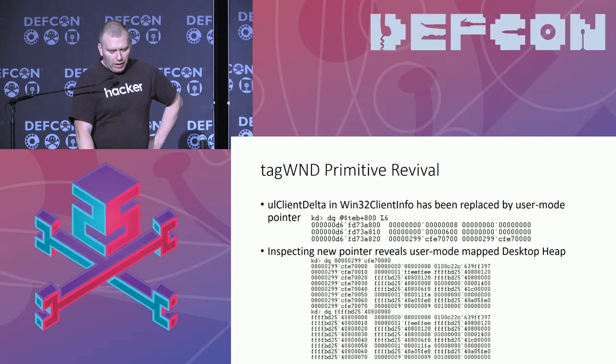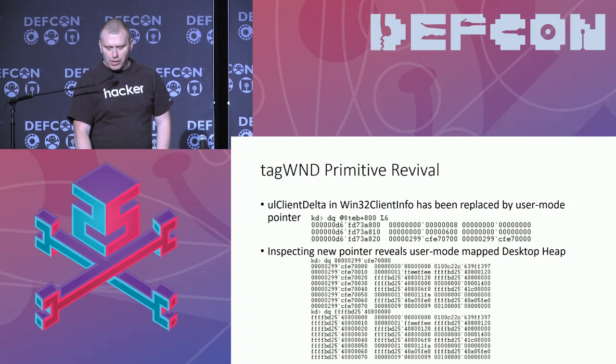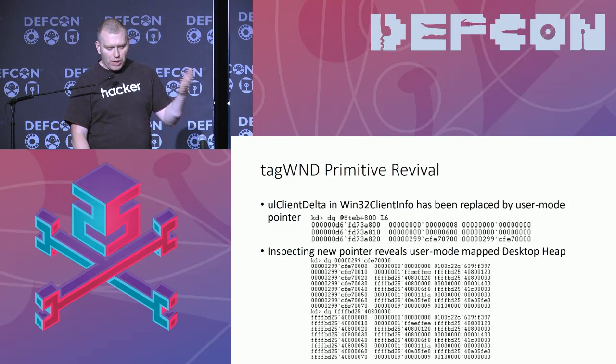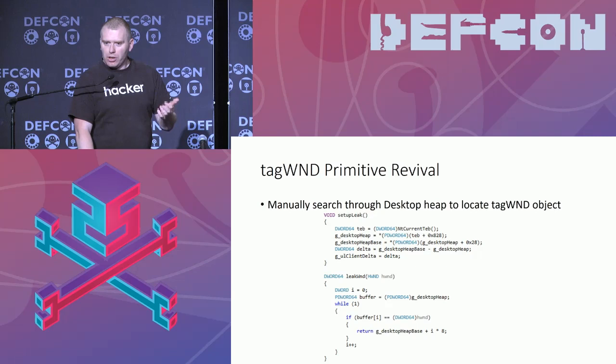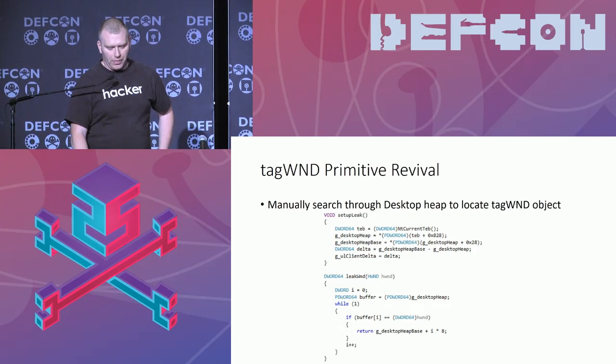As I said, the client delta is now gone, but if we inspect memory, we find it's been replaced by a user-mode pointer. And checking what's there at the user-mode pointer, we actually find the desktop heap — the kernel maps the desktop heap to user mode to make lookups faster. But let's also make sure we can get the kernel addresses. The user handle table was nice because it was metadata so it was fast to do a lookup. But we don't have that anymore, though we do have the actual data. So what we do instead is we just manually search through it: we take the handle value and search through the desktop heap until we actually find it. Once we find it, we know where it's at — so we're still able to leak the address.